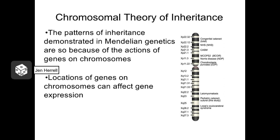Remember that Mendel didn't know anything about DNA or chromosomes at all, but nonetheless he was able to determine the basic patterns of inheritance simply through observation and logic. That's pretty impressive. Now some of his ideas were pretty spot on, but others were a bit off. Our current knowledge about chromosomes actually helps us reinforce some of his ideas and expand on others.